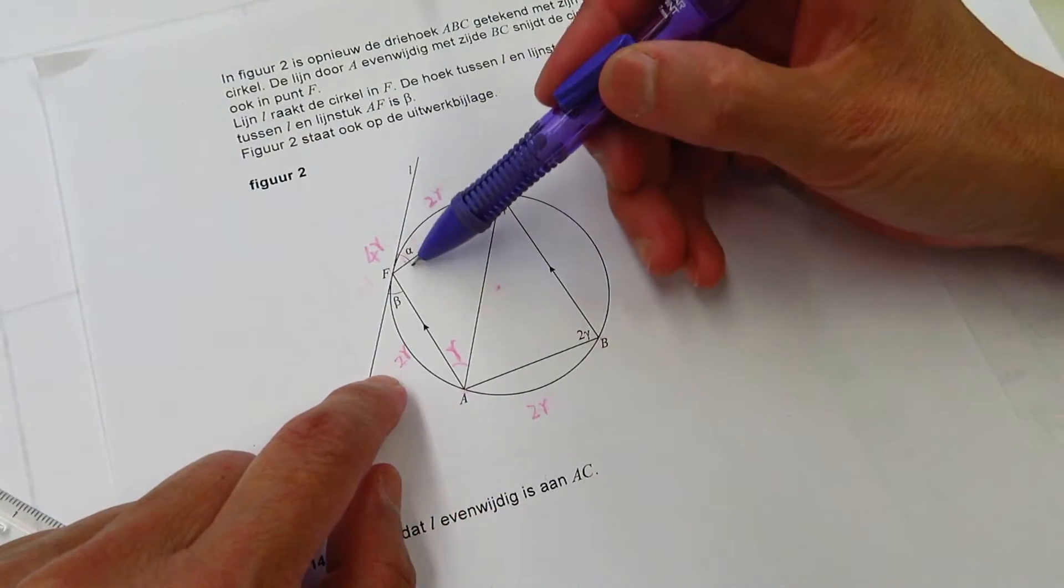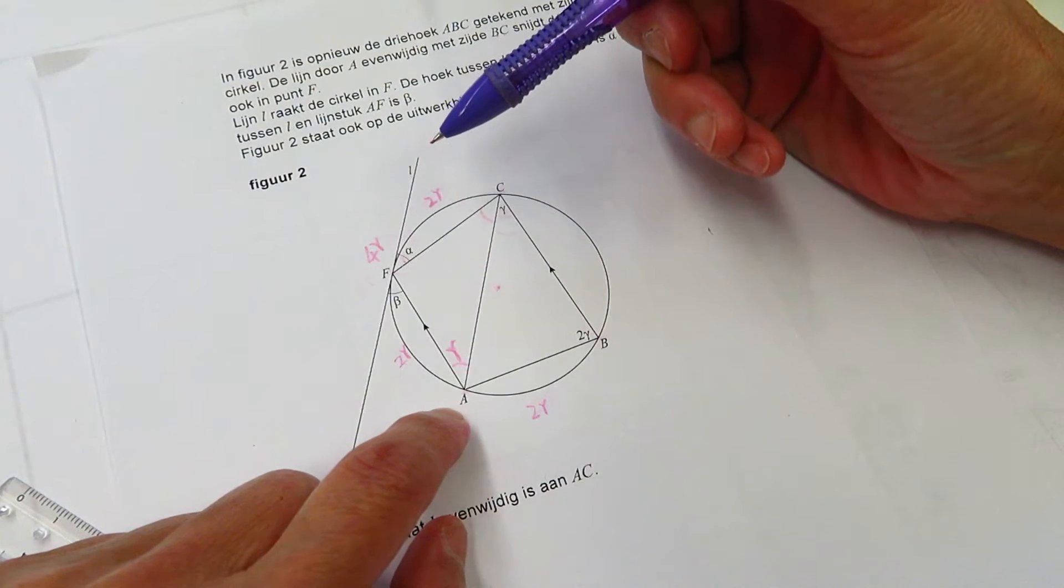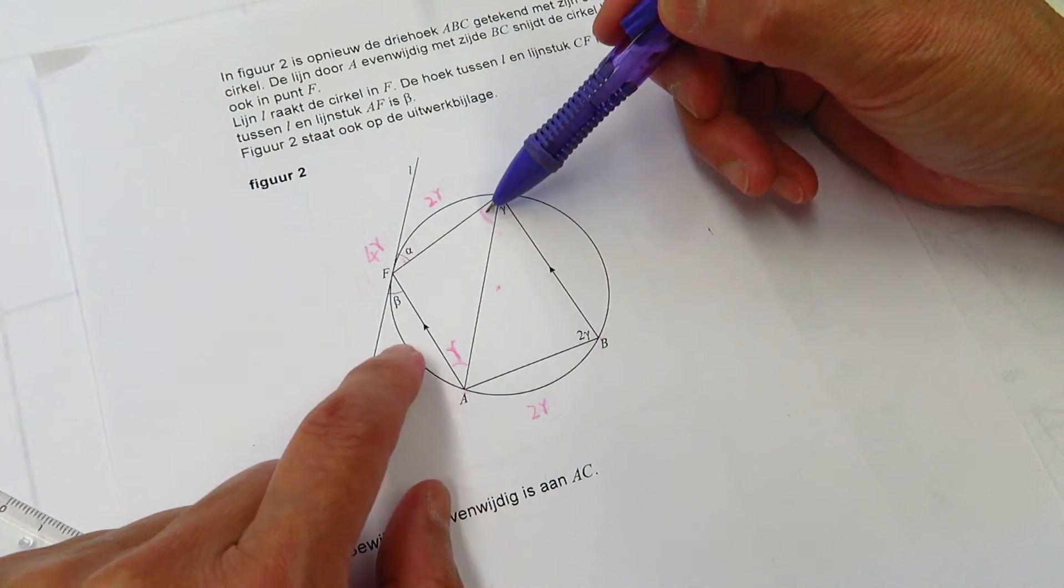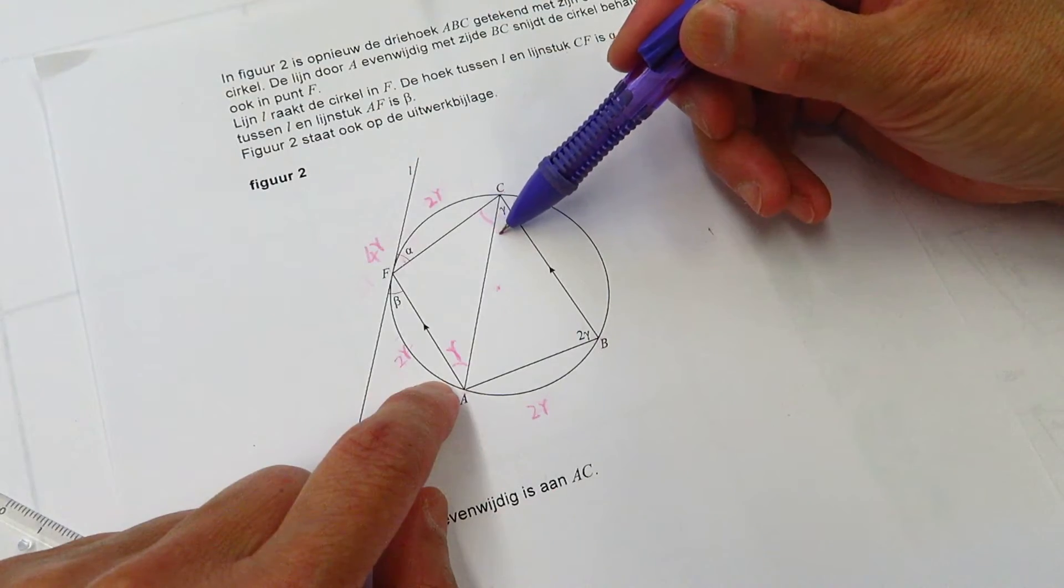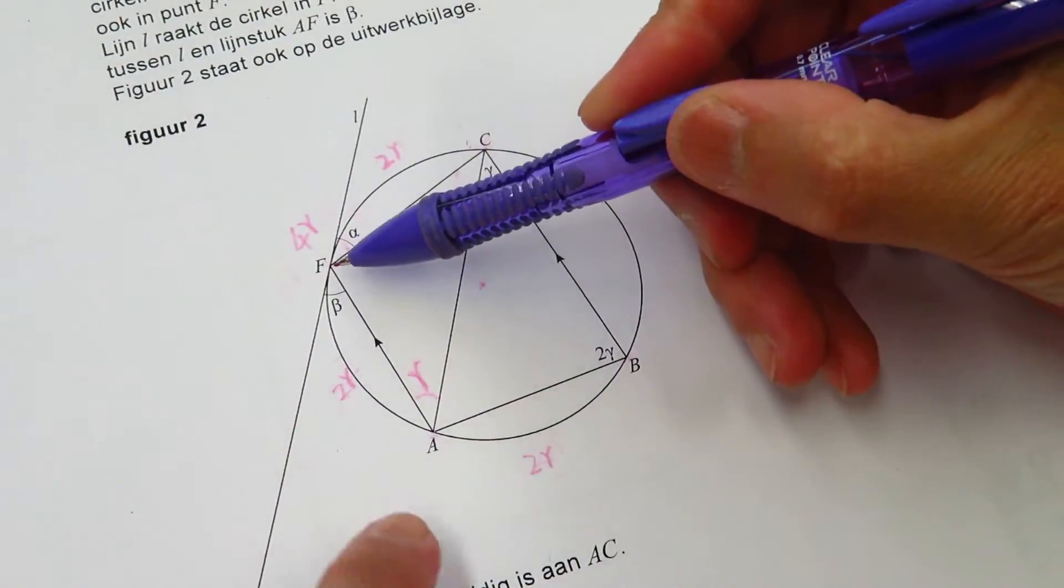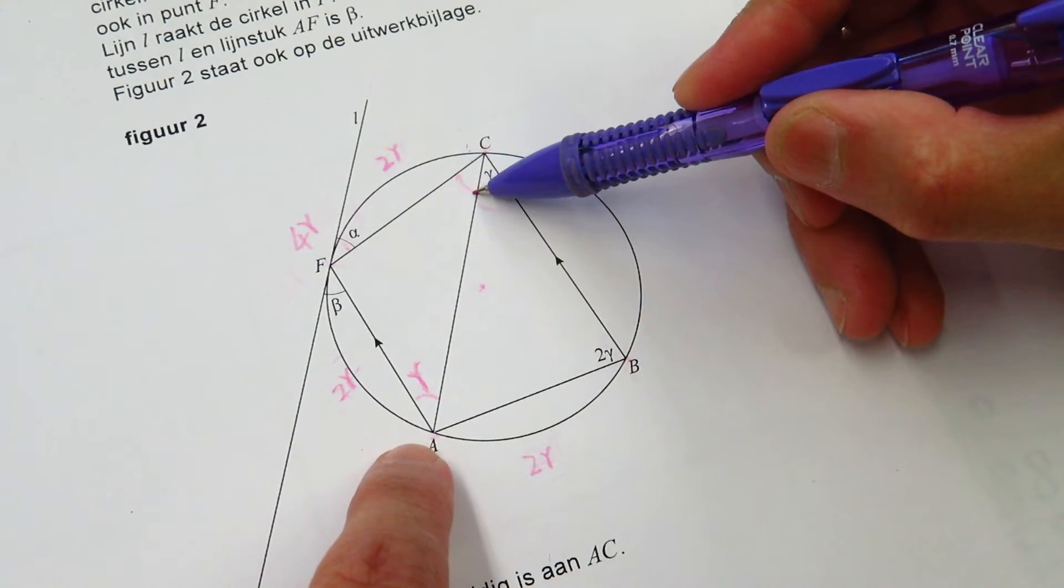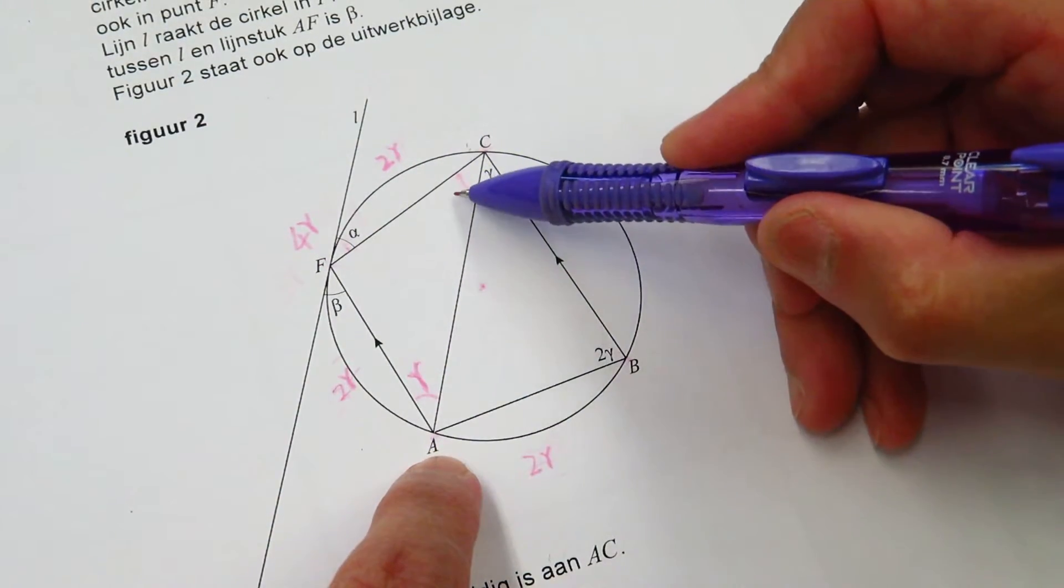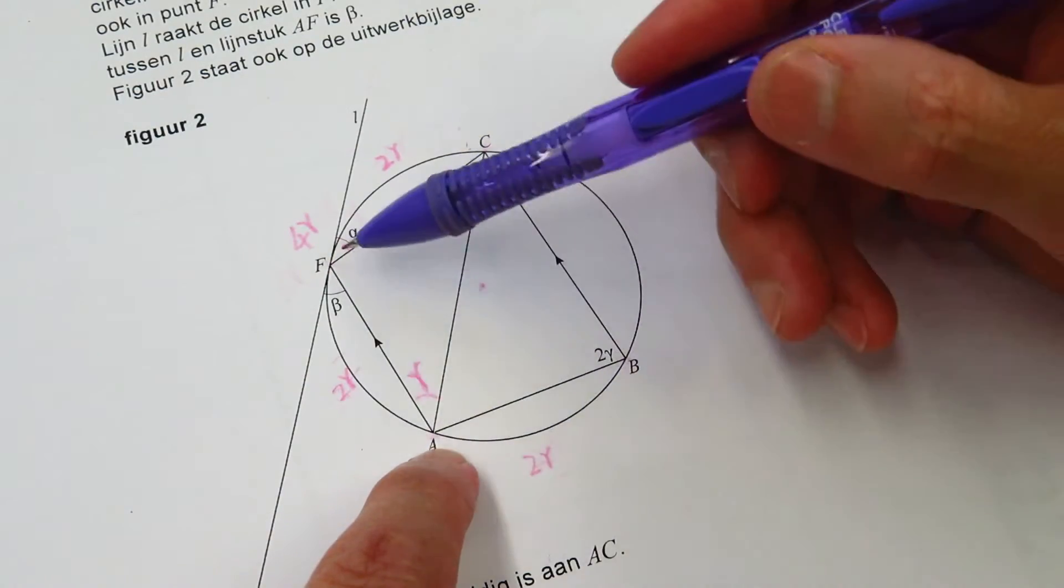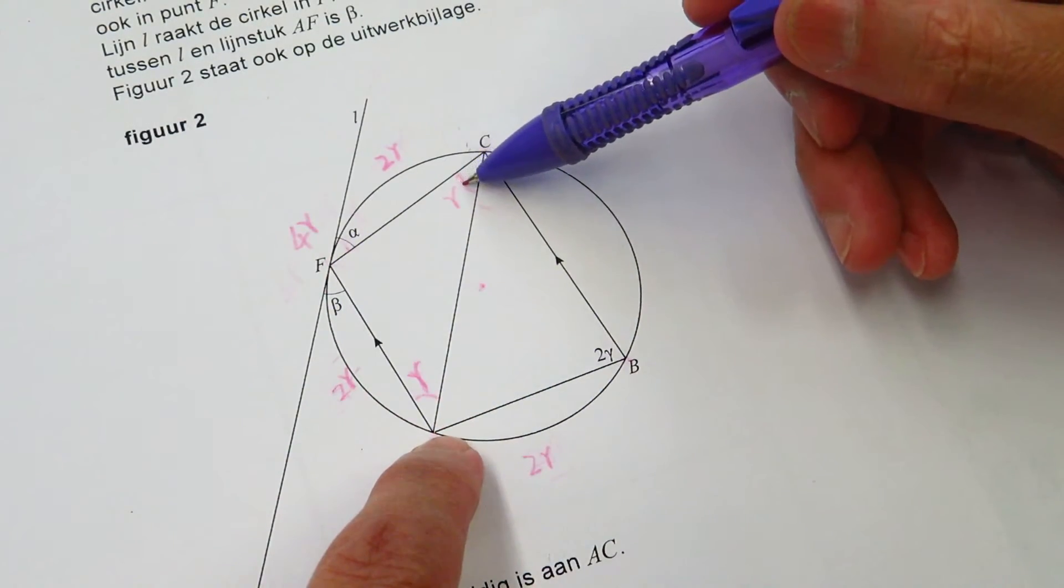So we get to know this angle is the same as this angle. Now we know AF, this arc, is 2 gamma. And then we know that this angle, FCA is gamma. This is inscribed angle over the arc of FA.